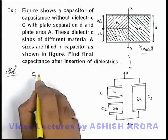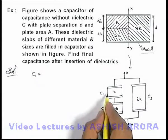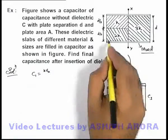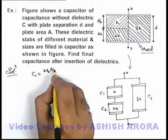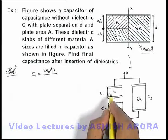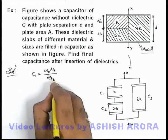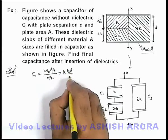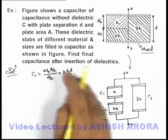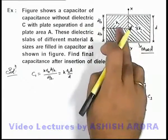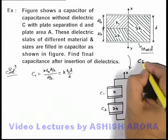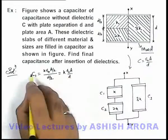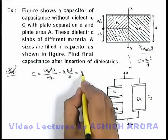The value of C1 can be written as k·ε₀ multiplied by plate area A/2, divided by plate separation d/2. This simplifies to k·ε₀·A/d. Since the overall capacitance of the system without dielectric is C, and C = ε₀·A/d, the value of C1 is therefore kC.